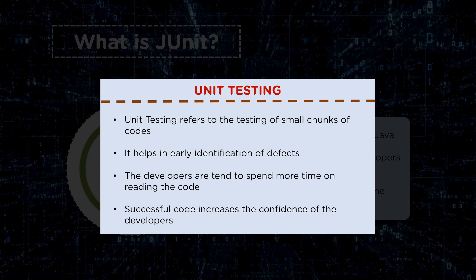Unit testing refers to the testing of small modules or small chunks of code. It is basically used for early identification of defects and bugs, because you cannot simply rely on the QA team to perform testing and then provide feedback. With a unit testing framework, you can immediately get feedback right away once you run the test cases. Developers don't have to spend more time fixing bugs because these test cases provide fast feedback.